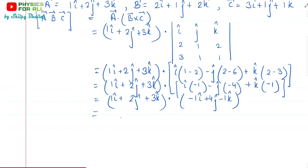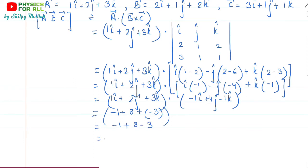Only components corresponding to the same directions interact: i·i, j·j, k·k. We know i·j = 0, j·k = 0, k·i = 0. So: one i-cap interacts with minus one i-cap giving −1; two j-cap interacts with four j-cap giving +8; three k-cap interacts with minus one k-cap giving −3. So −1 + 8 − 3 = 4. The scalar triple product equals 4, a finite value — we started with three vectors and ended with a number.